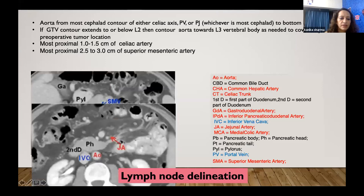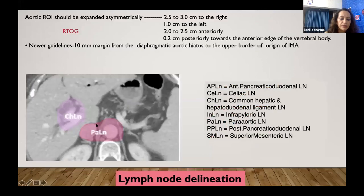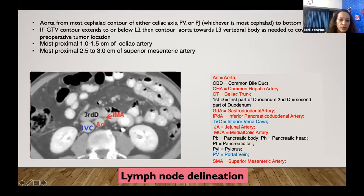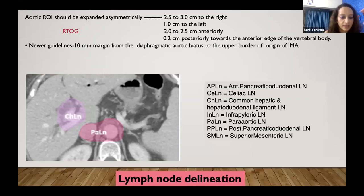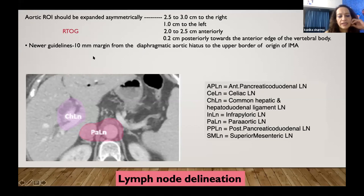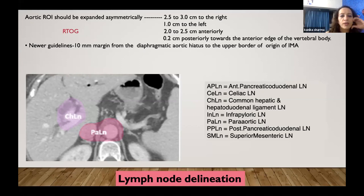Once you have drawn the vessels, expand your volumes around them to define lymph node stations. It is always good to draw individual stations first — this improves understanding and reduces chances of missing a nodal station. Once experienced, you can draw vessels as a common unit and expand. Previously, RTOG had an asymmetric margin for paraortics: 2.5–3 cm to the right, 1 cm to the left, 2–2.5 cm anteriorly, and about 0.2 cm posteriorly abutting the vertebral body. The newer guidelines have reduced margins to 10 mm, drawing from the diaphragmatic paraortic heights to the origin of the inferior mesenteric artery.